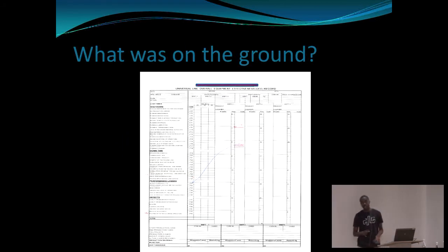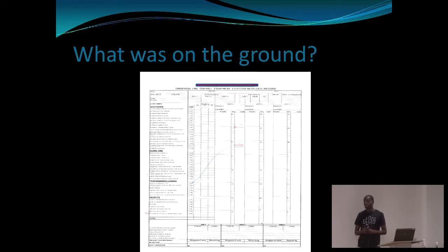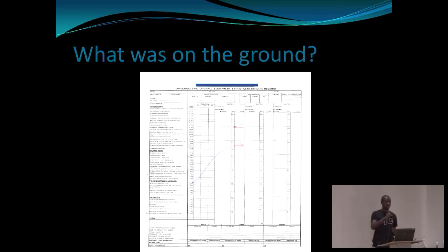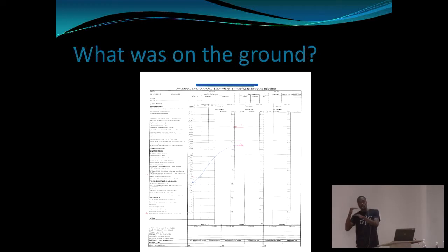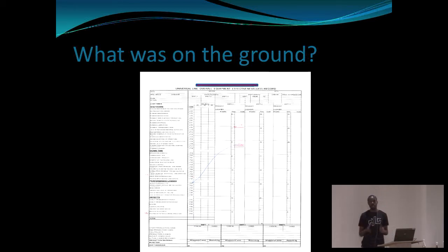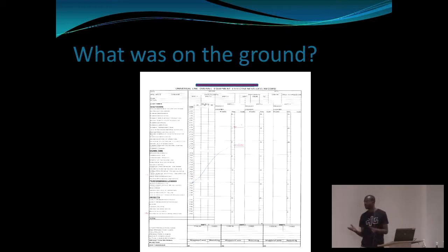So what was on the ground? This is a time-capturing sheet for the downtime. The downtimes are categorized into different categories. Firstly, there are downtimes that we cannot avoid — people have to rest, people have to eat. Then there are downtimes that are out of our control, like breakdowns and stuff like that.